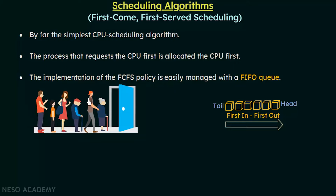If you are following a very fair queue, a person who comes at the end will never be given a chance to go in first or come in between any other members — they must stand at the end. Nobody will be allowed to take a chance until their chance arrives. Even if there are old people or children standing, in a fair queue they will not be given a chance until their turn arrives. In first come first served scheduling, this is exactly what is followed.